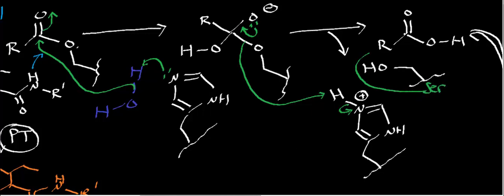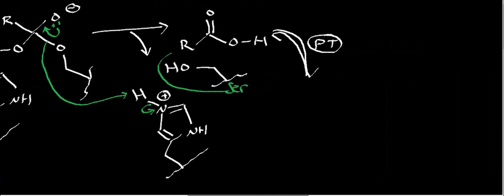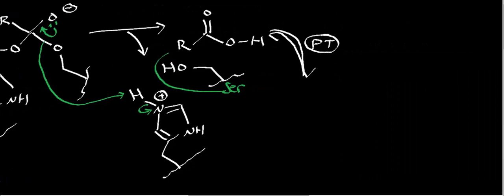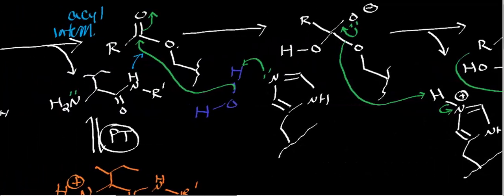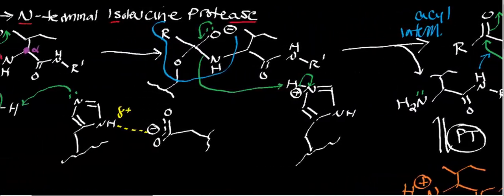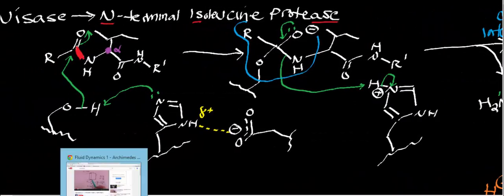Just like in the caspase case — and similarly for the C-terminal enzyme — we generate a carboxylic acid. Again, there's a proton transfer with solution, so at the end we should get a carboxylate, not a carboxylic acid. Let's now regroup on this mechanism — all proteases use this same mechanistic framework.